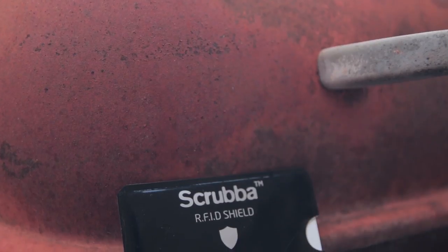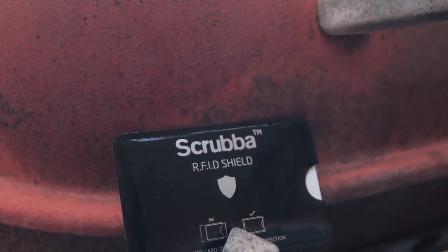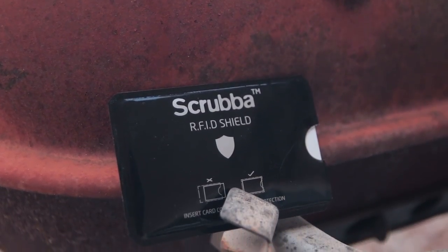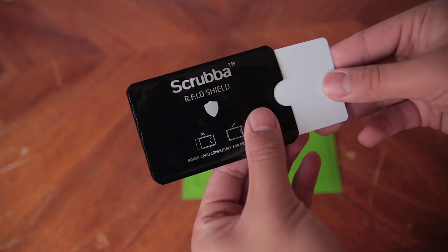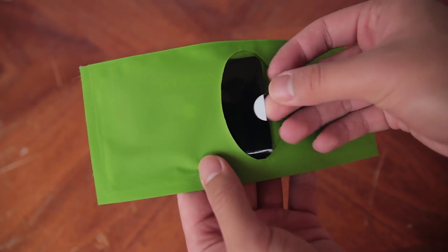It only holds one card, so if you have more than one RFID card, you might need to get another RFID blocking sleeve. All you have to do is insert the card into the sleeve and then insert the sleeve into your wallet.